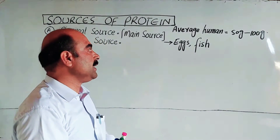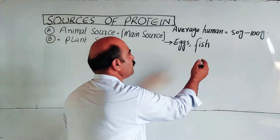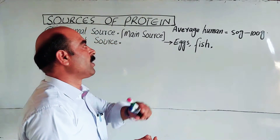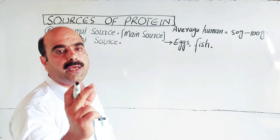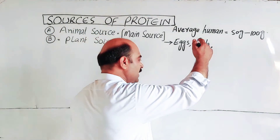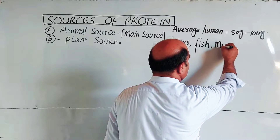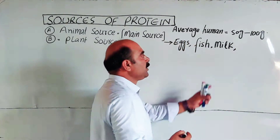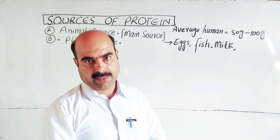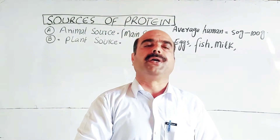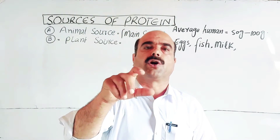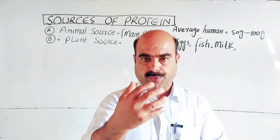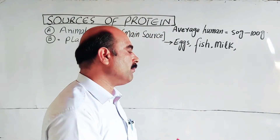Fish is also a good source of protein. Fish gives us protein and should be a part of the diet. Then there is milk - the protein in milk is called casein. Milk contains the protein casein.